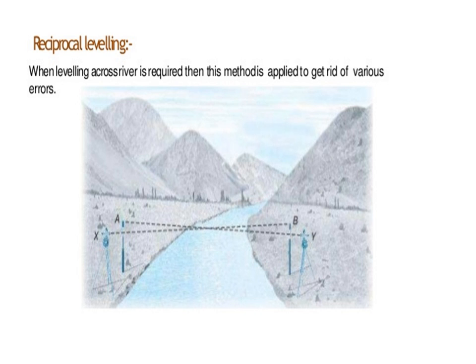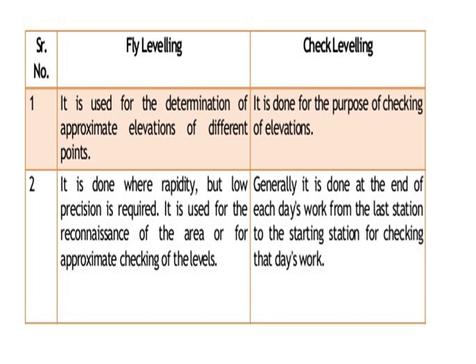Reciprocal leveling is carried out when leveling across a river is required. This method is applied to calculate the true difference in elevation between two points. In this case there is a possibility of errors such as curvature error and refraction error; so in order to eliminate these errors we adopt reciprocal leveling. Fly leveling is used for determination of approximate elevations of different points where rapidity but low precision is required; it is used for reconnaissance of the area for approximate checking of levels. Check leveling is generally done at the end of each day's work from the last station back to the starting station, to check the elevations calculated during that particular day.